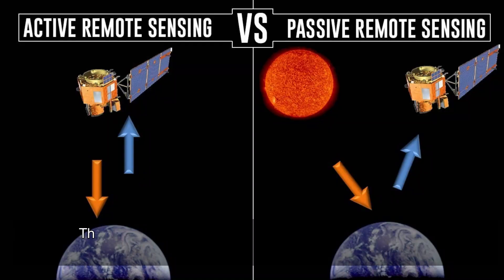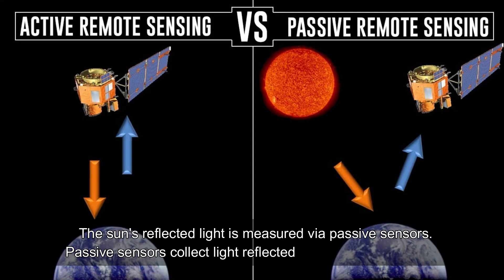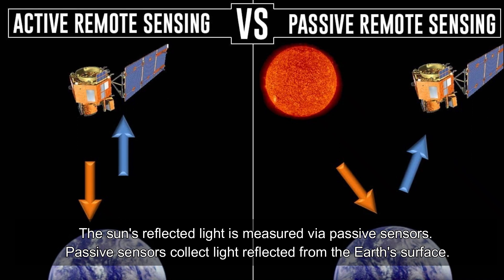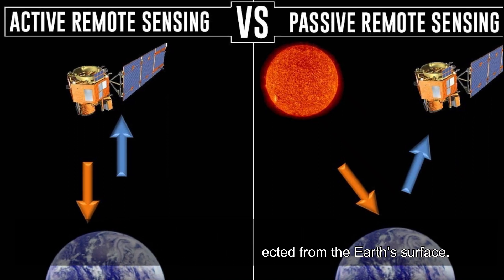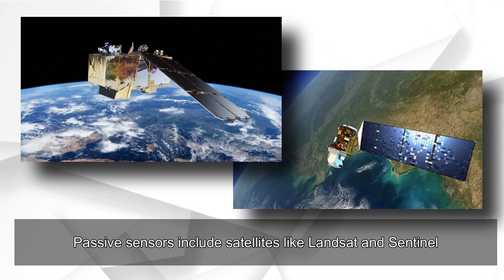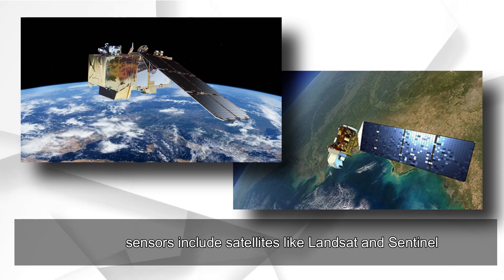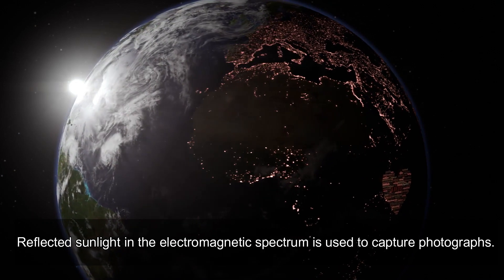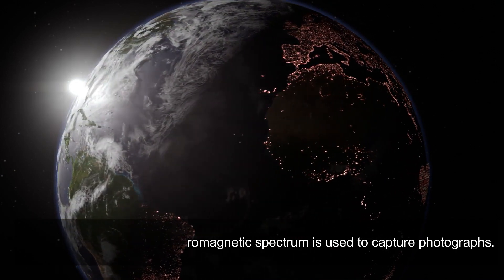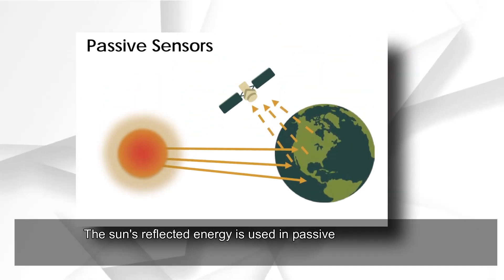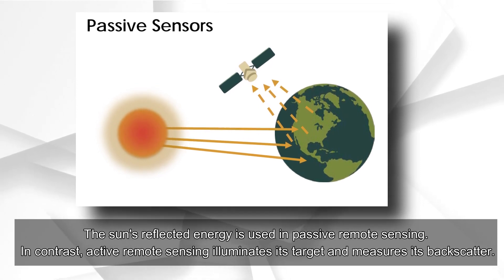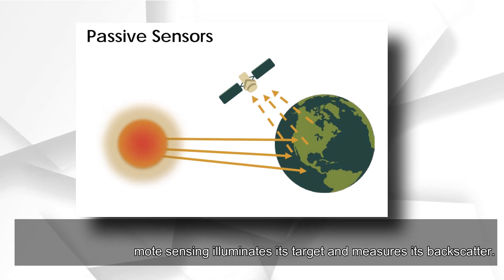Passive sensor: the sun's reflected light is measured via passive sensors. Passive sensors collect light reflected from the earth's surface, and examples include satellites like Landsat and Sentinel. Reflected sunlight in the electromagnetic spectrum is used to capture photographs. The sun's reflected energy is used in passive remote sensing, whereas active remote sensing illuminates its target and measures its backscatter.